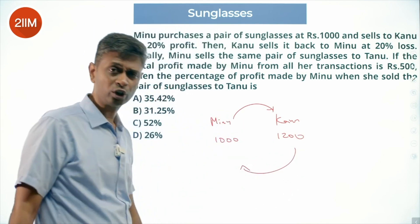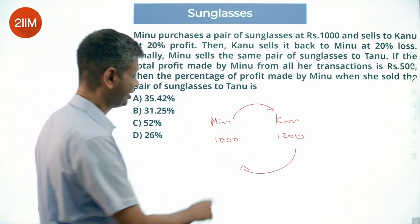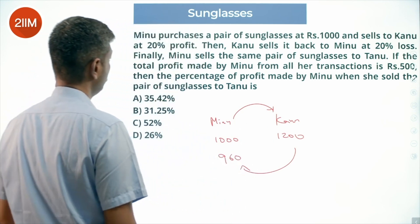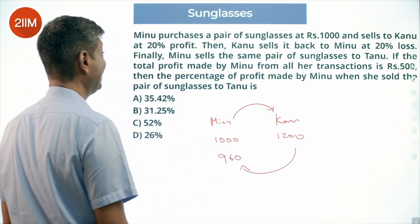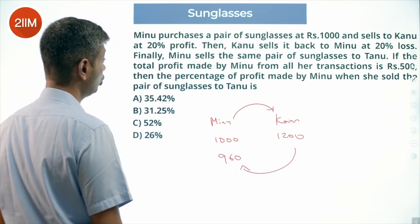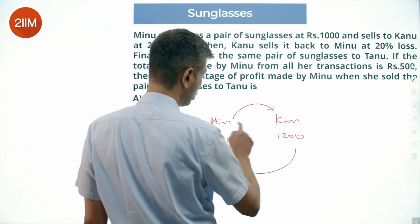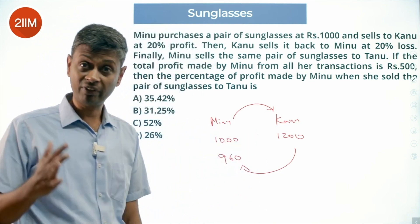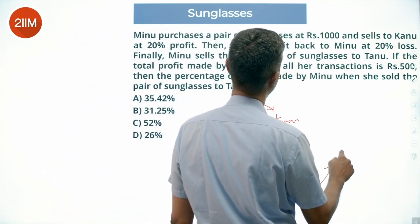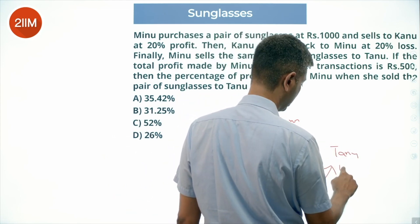20% of 1200 is one-fifth of 1200, which is 240. So Kanu sells it at ₹960. Minu finally sells the same pair of glasses to Tanu. The total profit made by Minu from all her transactions is ₹500, so she makes a profit of ₹200 here. Total is ₹500, so she's now selling to Tanu at 960 plus 300.